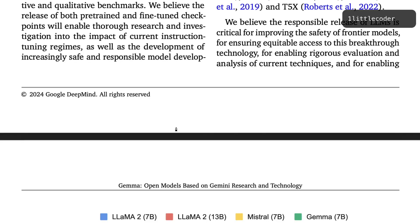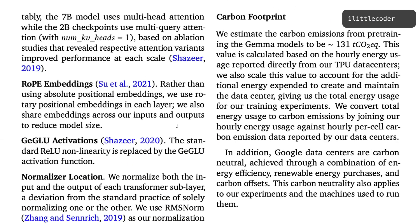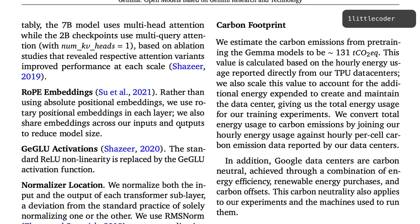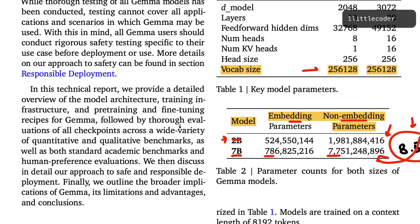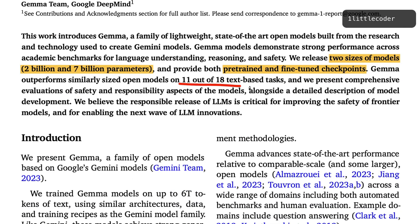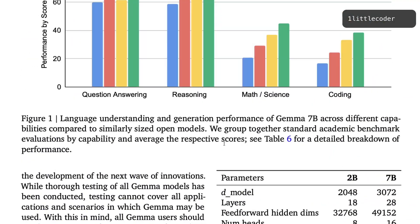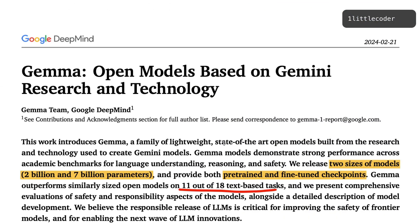Overall, the paper goes into a lot of details, but like many recent model papers, it lacks extensive transparency about training data, only mentioning broad domains. The biggest controversy is calling an 8.5 billion parameter model a 7 billion parameter model and then comparing it favorably against true 7B models on 11 out of 18 tasks. Despite these concerns, it's an excellent release and the speaker is looking forward to testing it zero-shot and with fine-tuning.